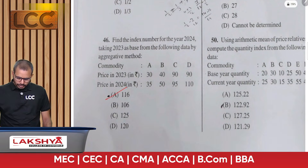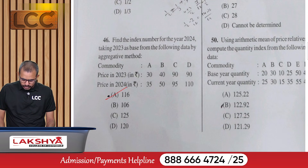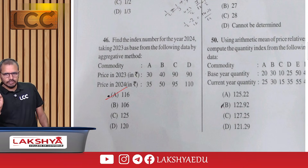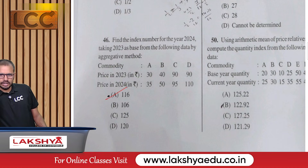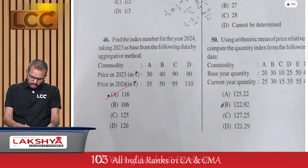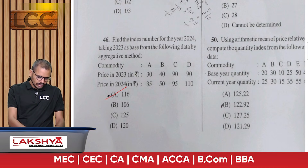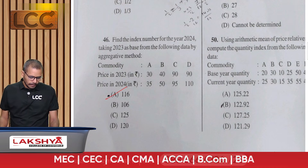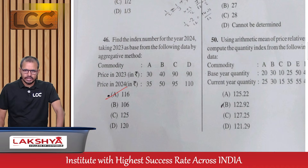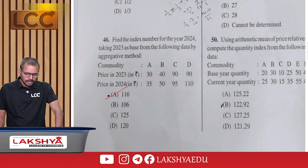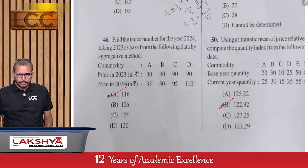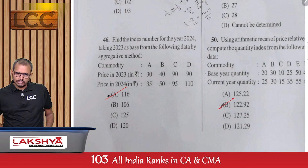Question 50: Using the arithmetic mean of price relatives, compute the quantity index number for commodities A, B, C, D, E, F with base year quantities 20, 30, 10, 25, 50, 40 and current year quantities 25, 30, 15, 35, 55, 45 — option B.